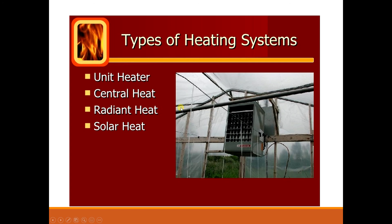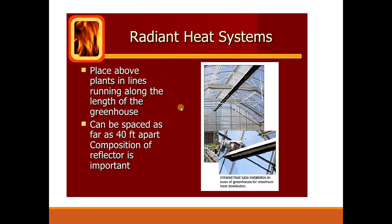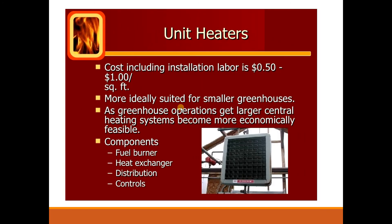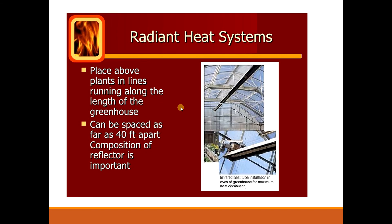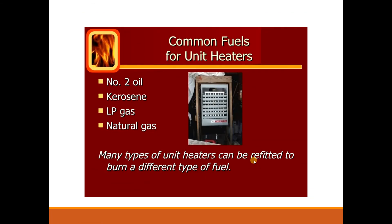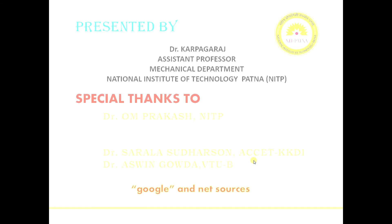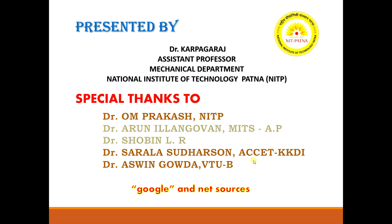Types of heating systems include small unit heaters, central units, solar heat, and radiant heat. Radiant heat uses halogen lights to generate heat. Unit heaters are the small electrical heaters used in your room. Solar heat uses solar energy to generate heat - in greenhouses, glass panels are used to trap solar heat for this purpose.